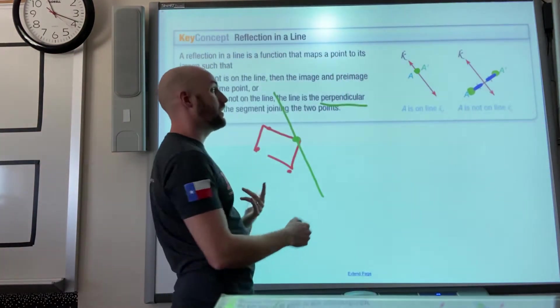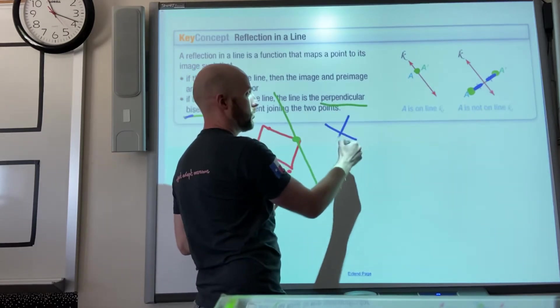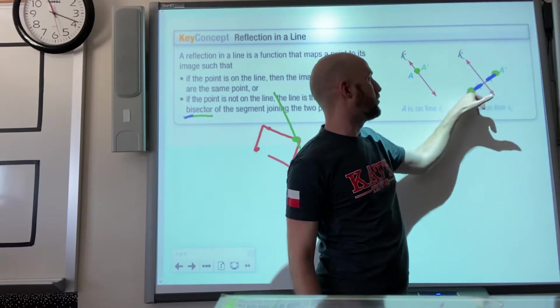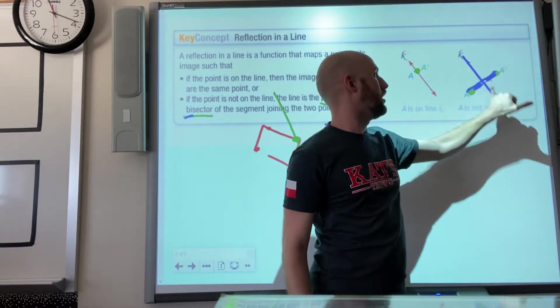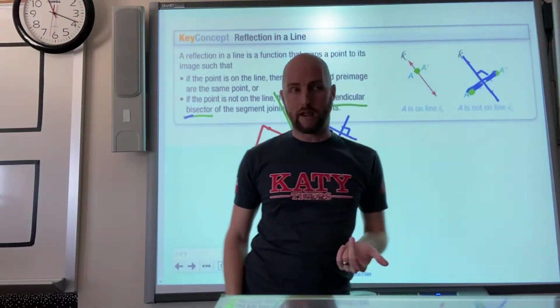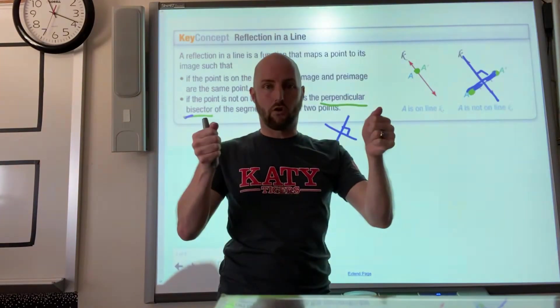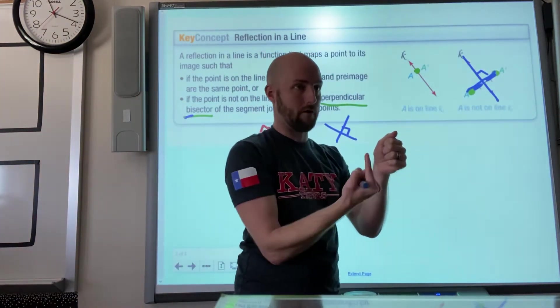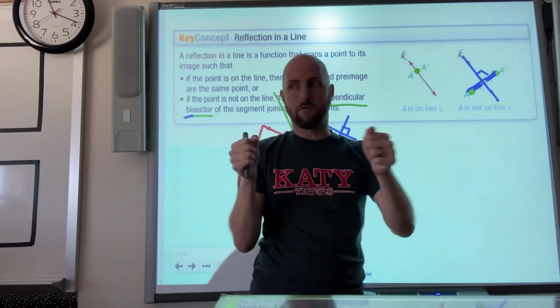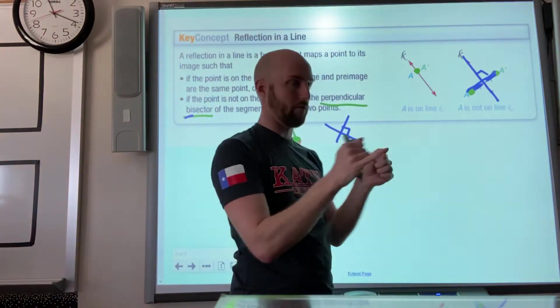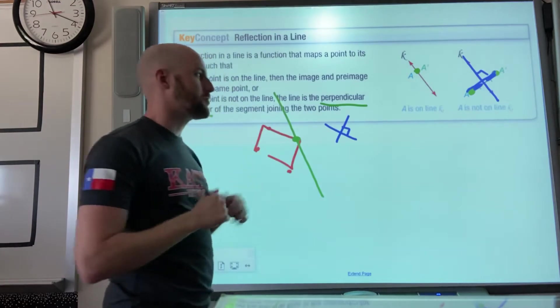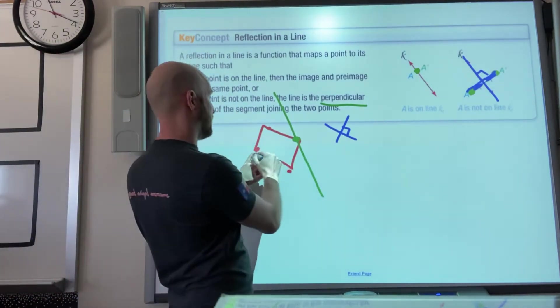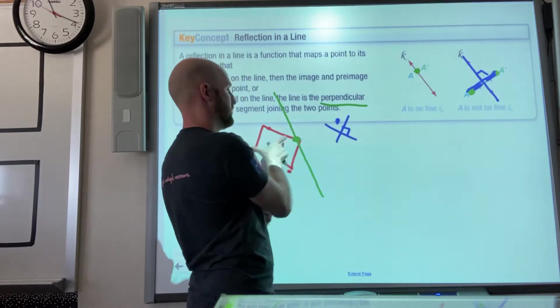When I look at my mirror in the morning to see my wonderful face, if I'm this far from it, my reflection is going to be the same distance. As I walk closer, my reflection gets closer. So it is the same distance from the mirror on both sides. Perpendicular means we intersect at a 90 degree angle. But don't worry so much about that vocabulary. What's on the line stays there. If it's off the line, its reflection appears the same distance on the other side.